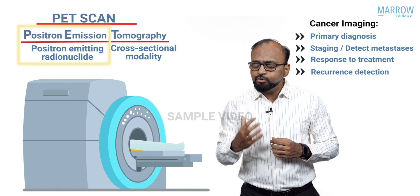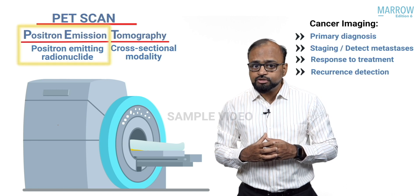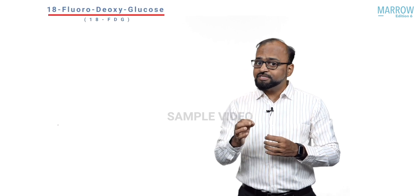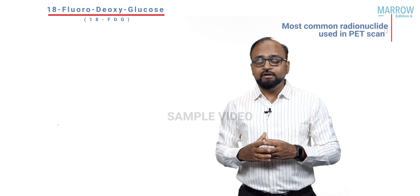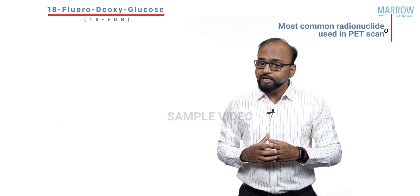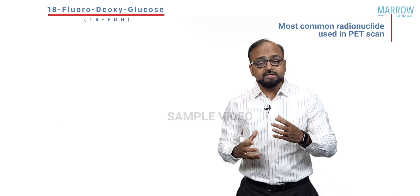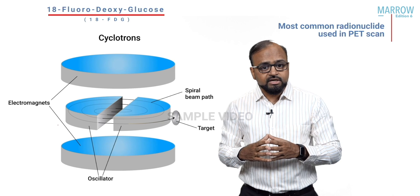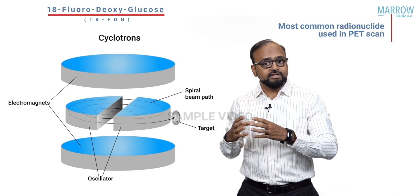What is the radionuclide used in PET scan that emits positrons? It is 18-fluorodeoxyglucose, or 18-FDG. Remember, 18-FDG is the most common radionuclide used in PET scan. It is specifically synthesized inside a cyclotron.